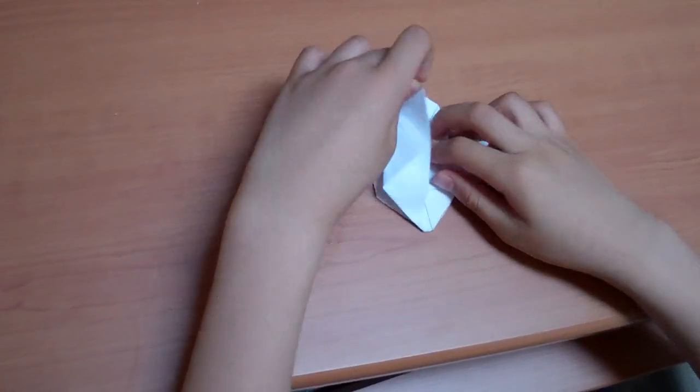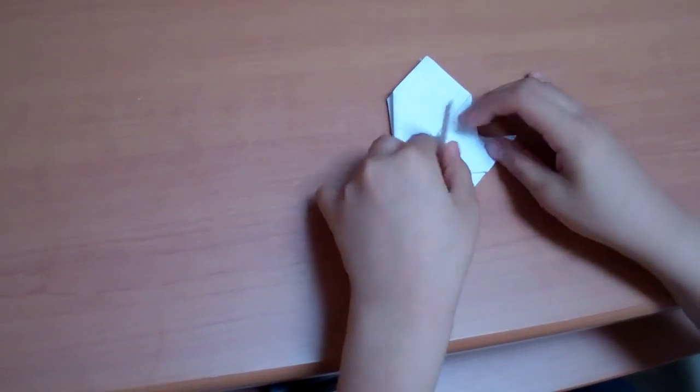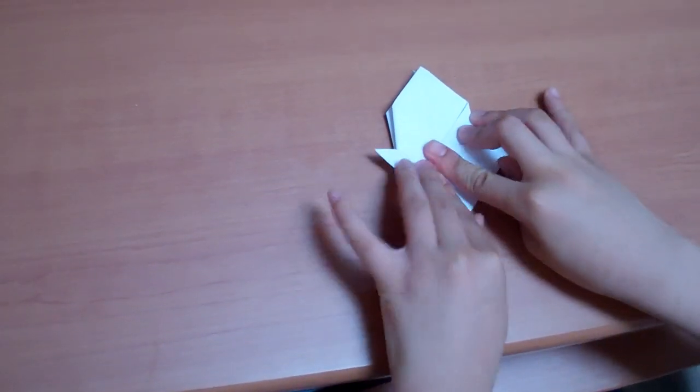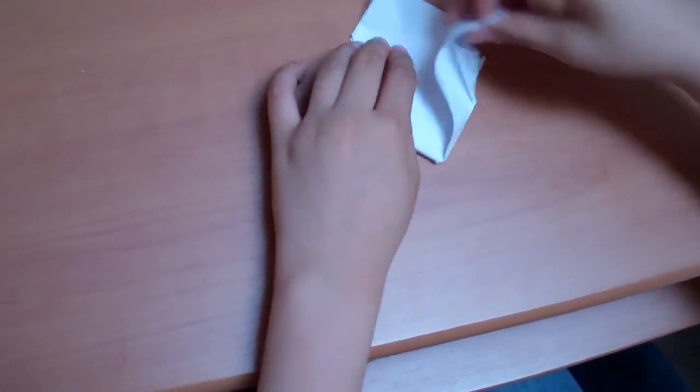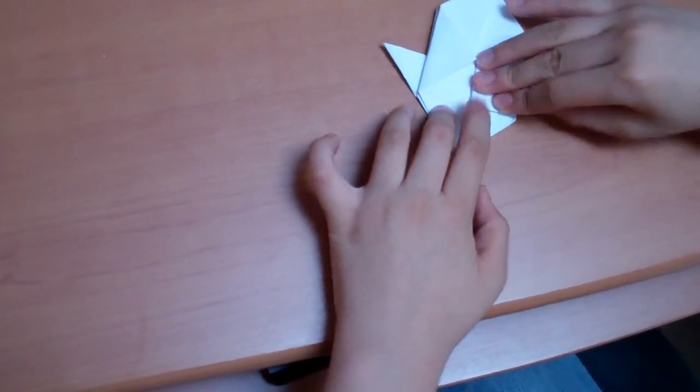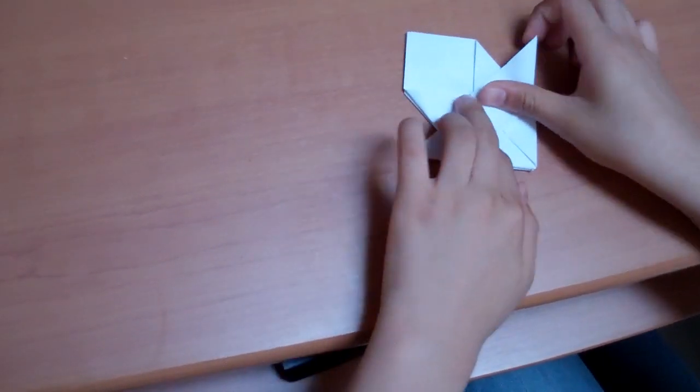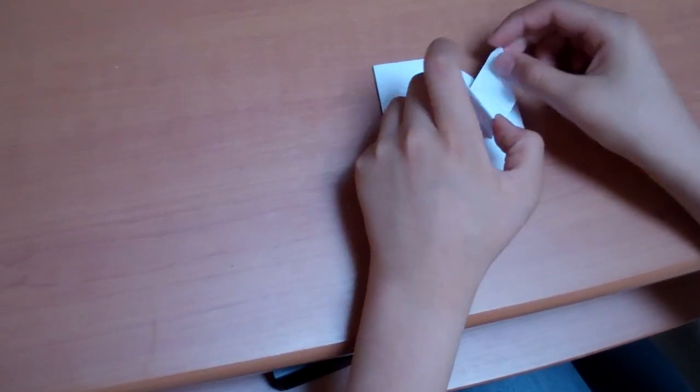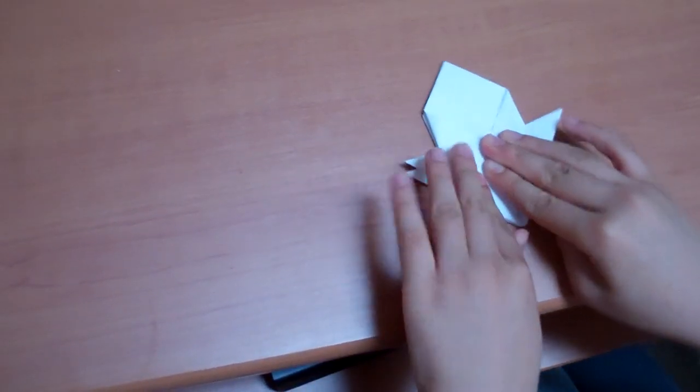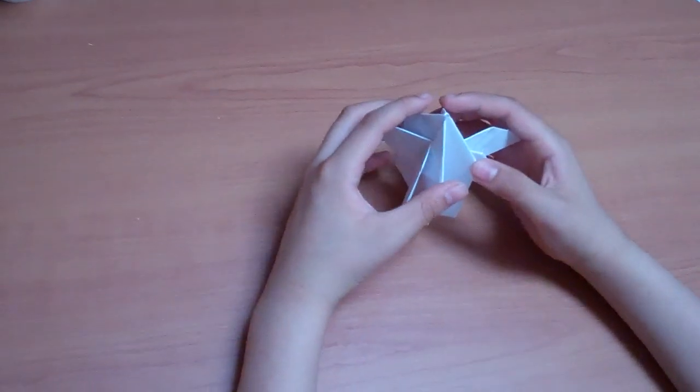And now you do the same for the other three sides. So you should have something that looks like this. Now you're almost done with the paper water bomb.